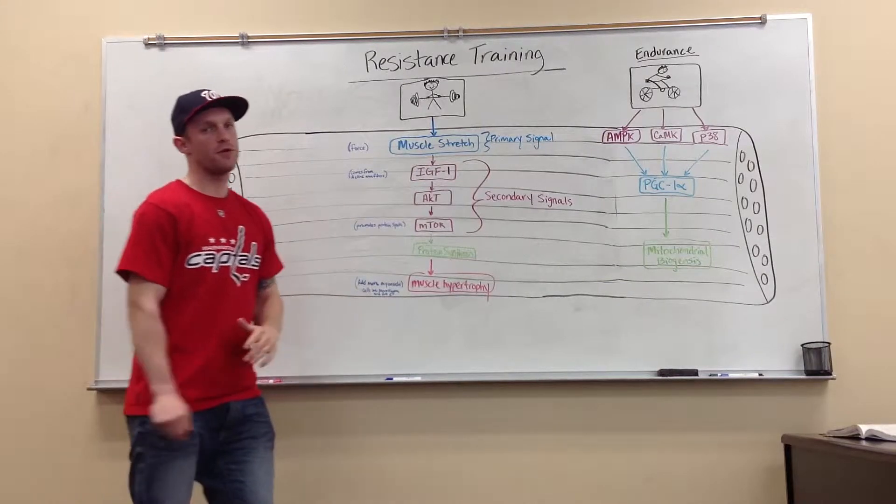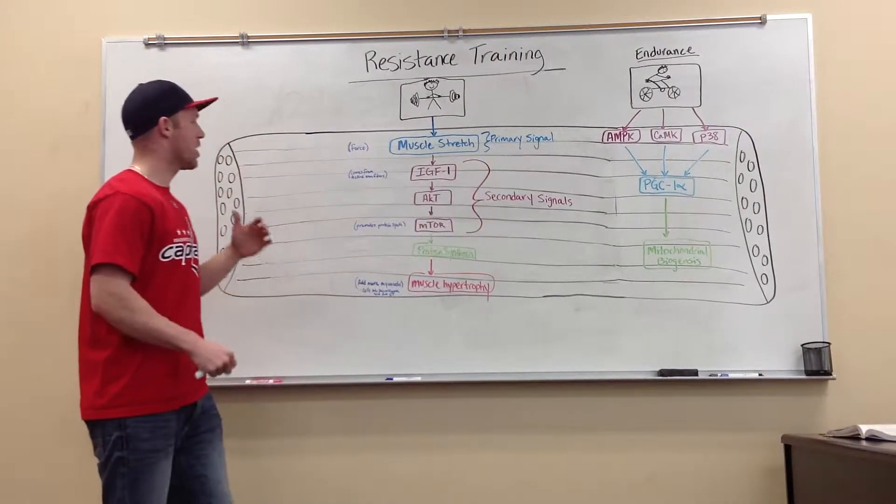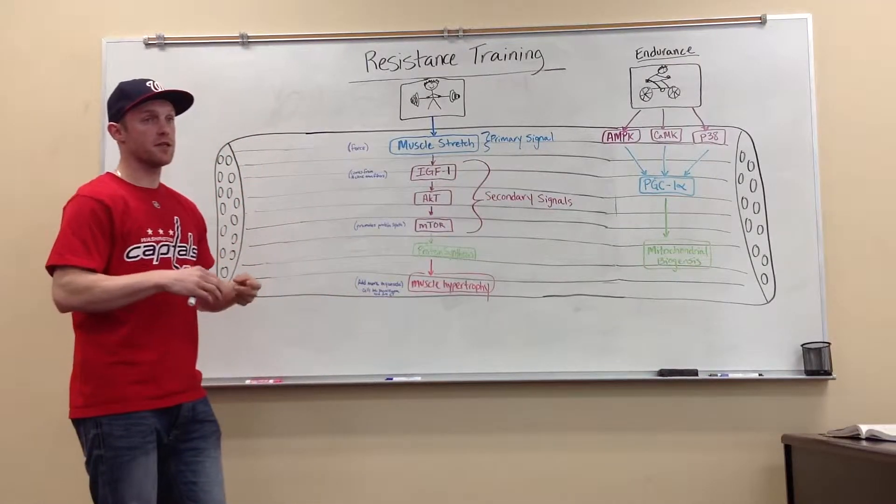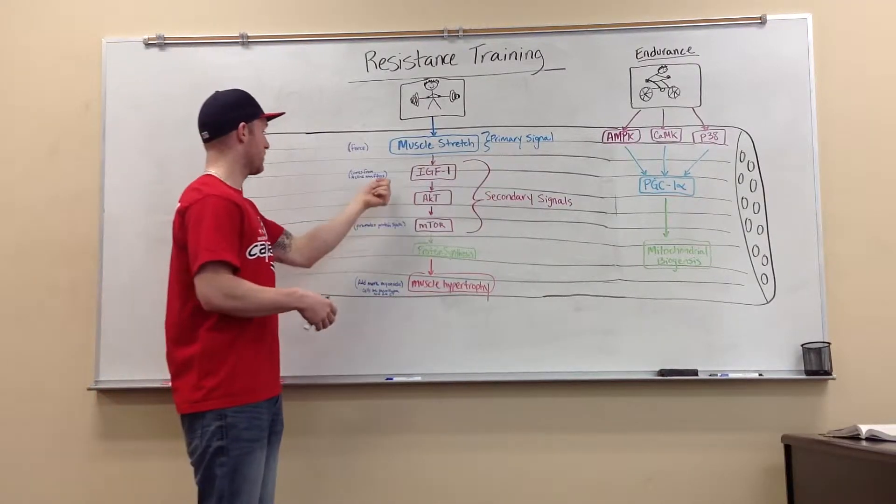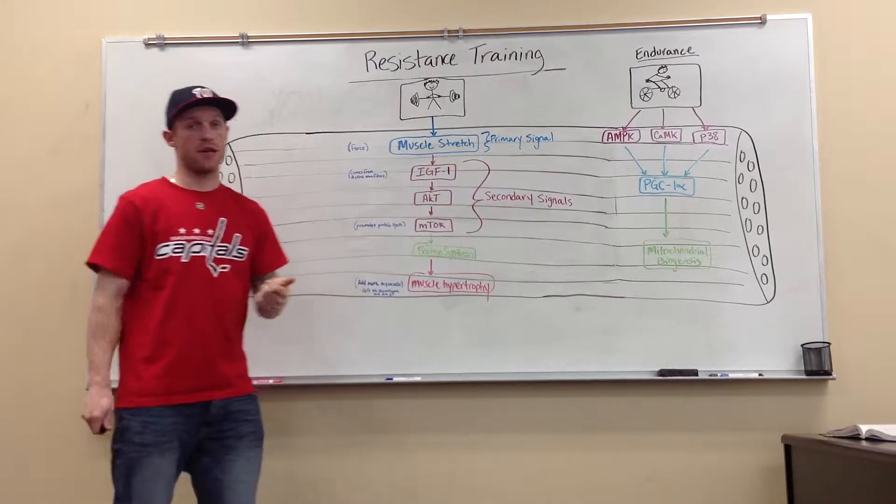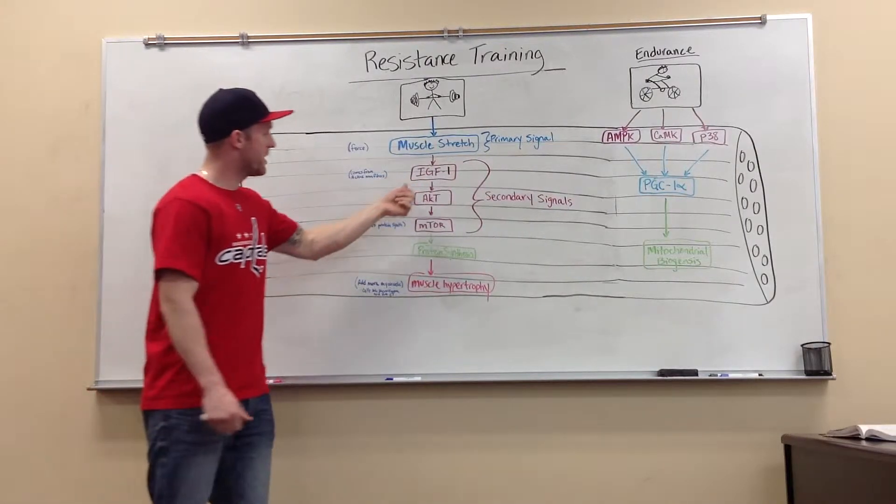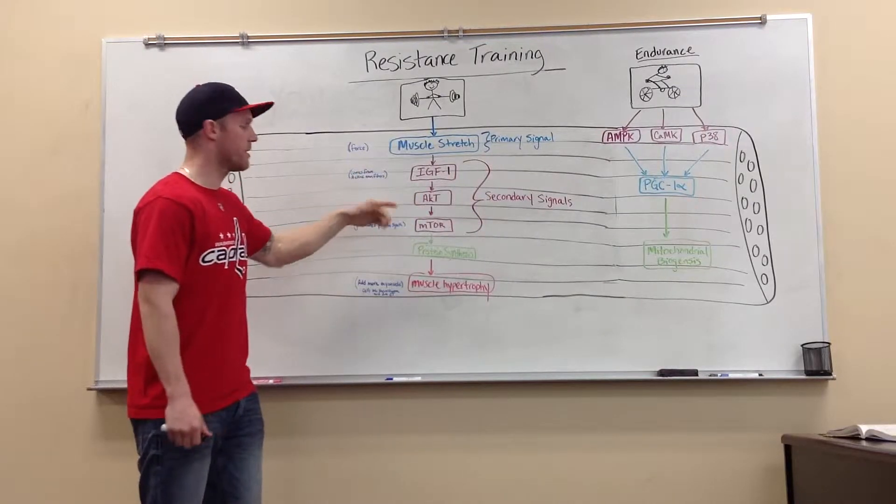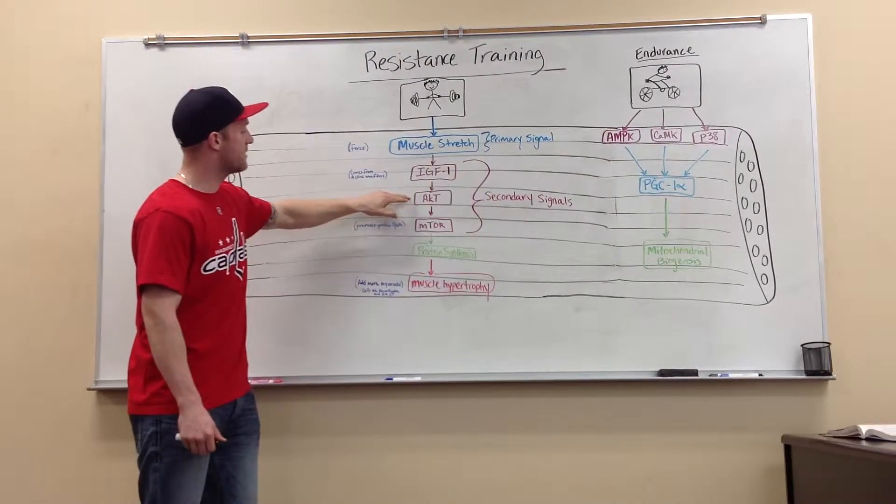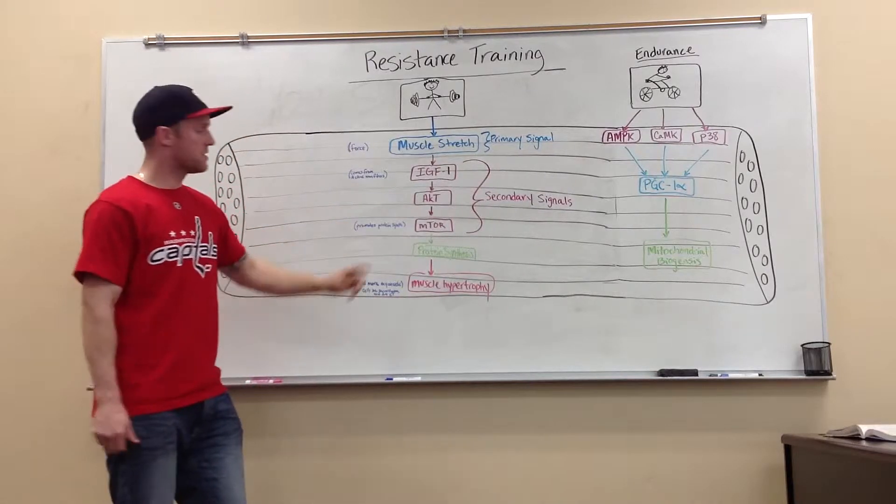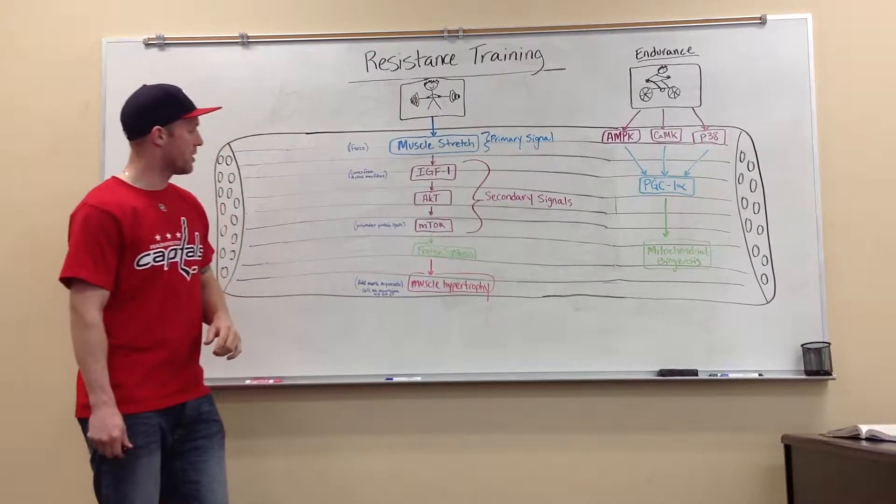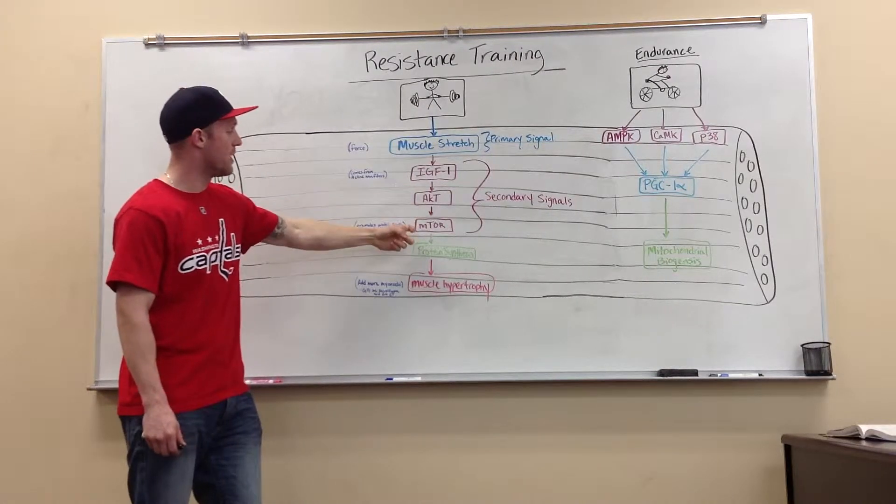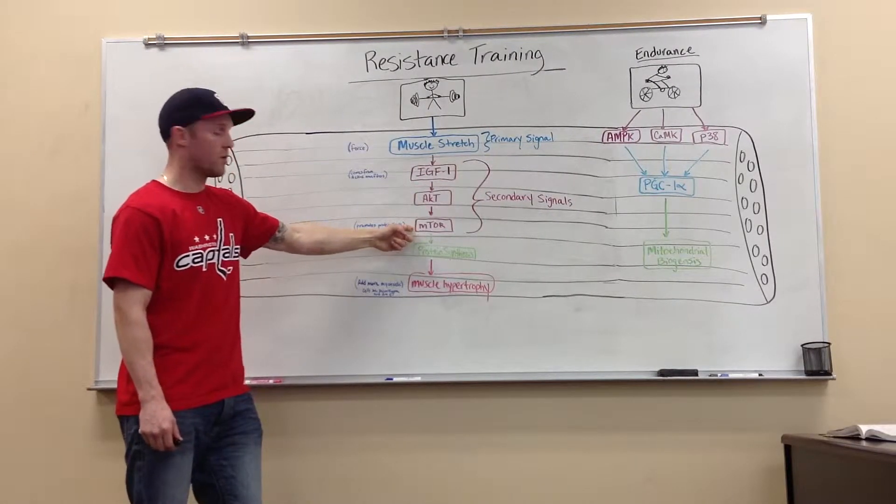Now, IGF is pretty much like your growth factor, and it comes from active muscle fibers. So if you're lifting and doing weights, your fibers are contracting, so it's going to release IGF. Well, IGF is then going to leave and go to the actual muscle membrane or cell, whichever you want to call it, and it's going to activate AKT. Now, there's not really a lot about this in the book, but just know that it's a coexisting factor that leads to MTOR, which is where I'm going to go next.